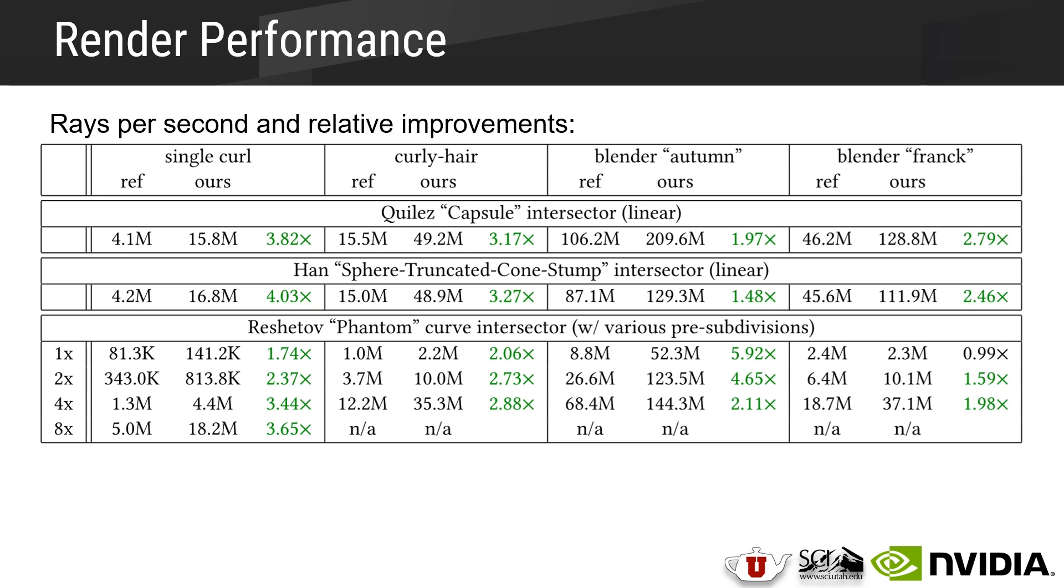A bit of background on that phantom intersector, it's recommended that you subdivide curves at inflection points to improve the numerical precision and the performance of that intersector. And an interesting observation, when combined with our technique, is that when we use that phantom intersector, our improvement over the reference increases with the number of pre-subdivisions, in particular for very curly models like Frank. This indicates that the subdivision leads to a more cylindrical-like segment that can be more tightly enclosed by an OBB than a highly curved segment would be.